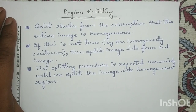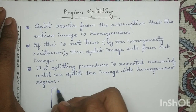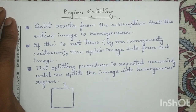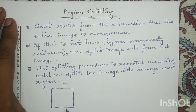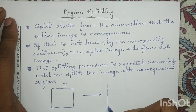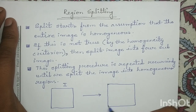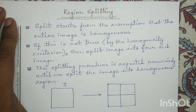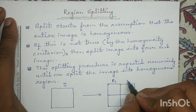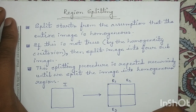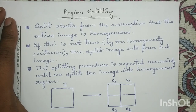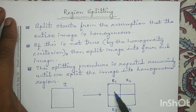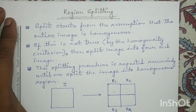For example, we have a digital image I. For this digital image I, we will check the homogeneity condition. If it is satisfied, we will not split it into 4 quadrants. If it doesn't satisfy the homogeneity condition, we will split it into 4 quadrants and give naming to each region — R1, R2, R3, and R4. Then for each sub-region, we will check the homogeneity condition again. If satisfied, we will not split it; otherwise, we will split it into 4 quadrants.